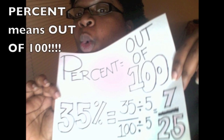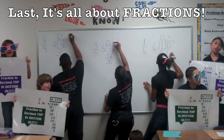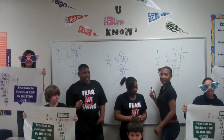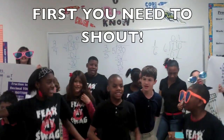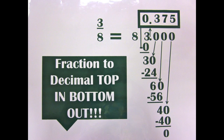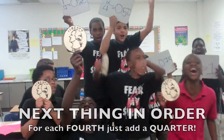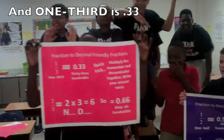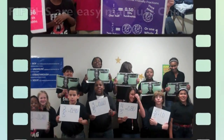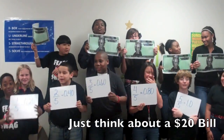Percent means out of 100! Last is all about fractions — pay attention, don't make mistakes with fractions! Decimal, top and bottom and out! For each fourth, just add a quarter. And one-third is .33, one-half equals .50! These are easy, man, just chill! Just think about a $20 bill!